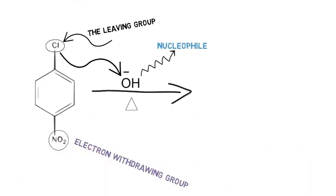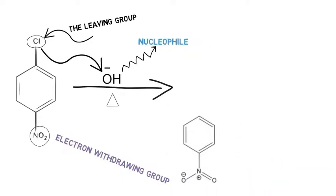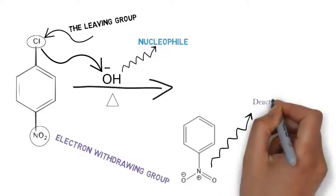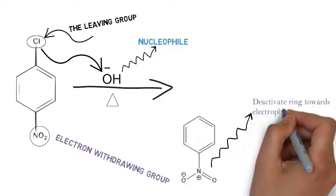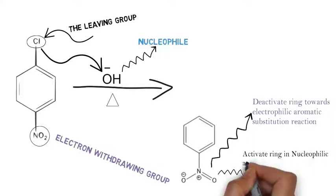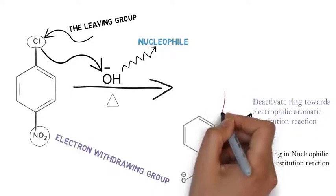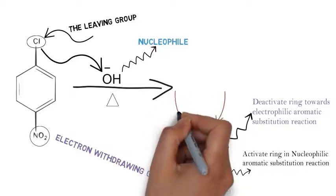In electrophilic aromatic substitution reaction, electron withdrawing groups deactivate the ring in EAS reaction, but electron withdrawing groups activate the ring in nucleophilic aromatic substitution reaction. These electron withdrawing groups work very well if present in ortho position or in para position.